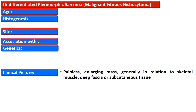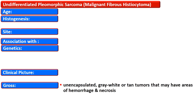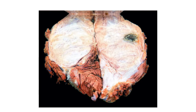They begin as a painless enlarging mass, generally in relation to skeletal muscle, deep fascia, or subcutaneous tissue. Grossly they are usually unencapsulated gray-white or tan tumors that may have areas of hemorrhage and necrosis. The gross picture of the cut surface shows lobulation; the tumor is circumscribed with a gray-white fleshy cut surface and areas of hemorrhage and necrosis.